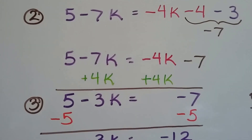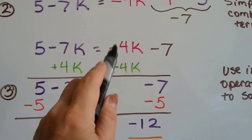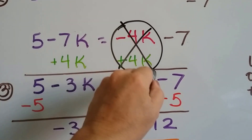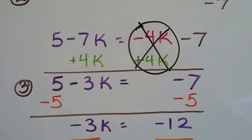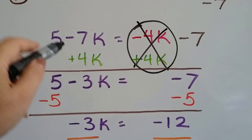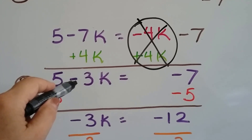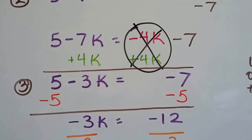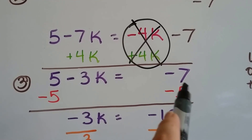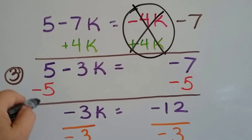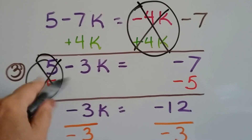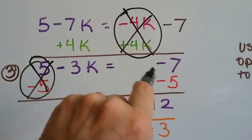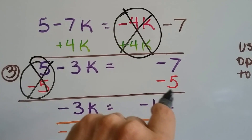Now we can start using those inverse operations. We've got a negative 4k, so we can add 4k to both sides. That creates a zero pair on the right and cancels it off. Adding 4k to negative 7k gives us negative 3k. Now we can subtract 5 from each side to get rid of the 5. Positive 5 minus 5 creates a zero pair. Our equation now says negative 3k equals negative 12, because negative 7 minus 5 is negative 12.